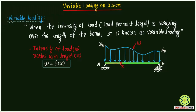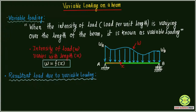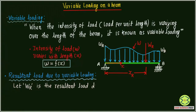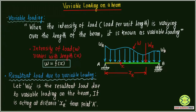Now we need to find the resultant load due to variable loading. We want to express the effect of this variable loading as a single equivalent load, called the resultant load W_R. This resultant load W_R acts at a distance X_R from point A, replacing the entire variable load distribution on the beam.